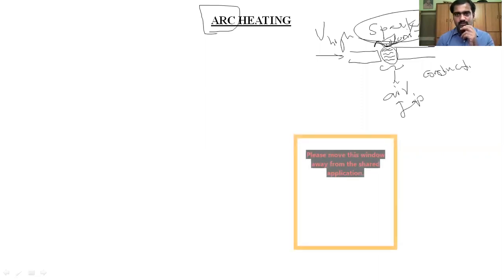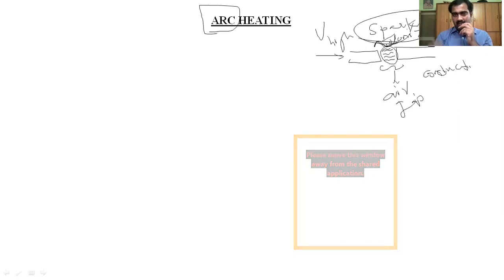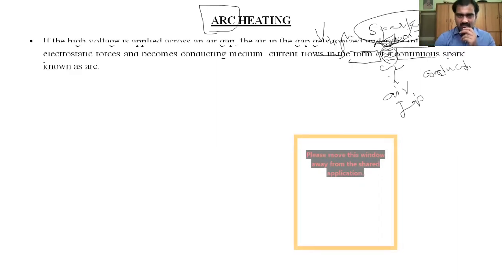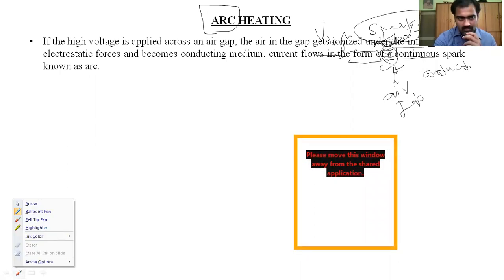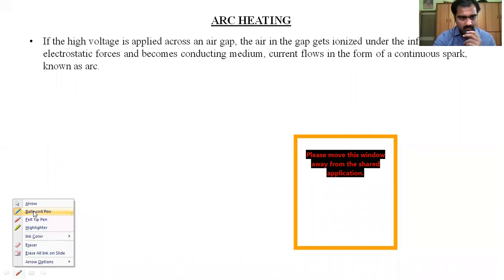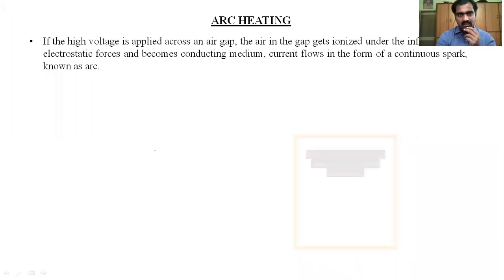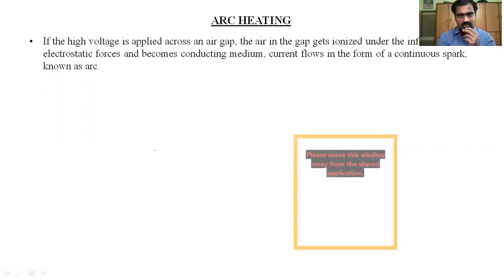High voltage is required for striking an arc. To produce this high voltage, we use a step-up transformer. With available single phase AC supply of 230 volts, we step up the voltage using a step-up transformer. A transformer is a static device which transforms energy from one voltage level to another without changing the frequency. It has no rotating parts. By placing a step-up transformer, we increase the voltage from the AC supply to strike the arc.